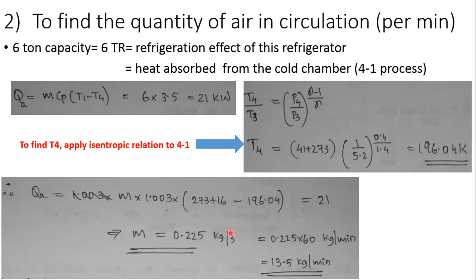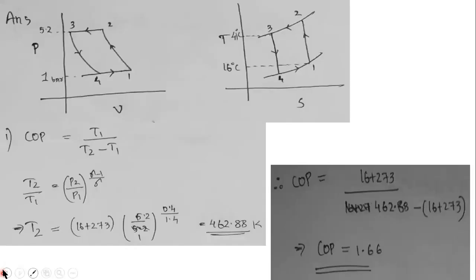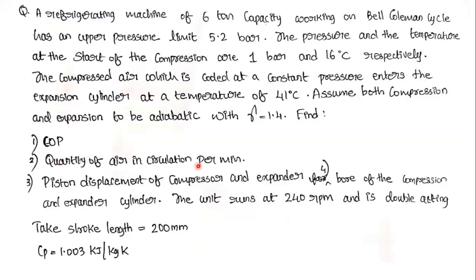Converting from kg/s to kg/min by multiplying by 60 gives 13.5 kg/min. That completes part two — the quantity of air in circulation is 13.5 kg/min.